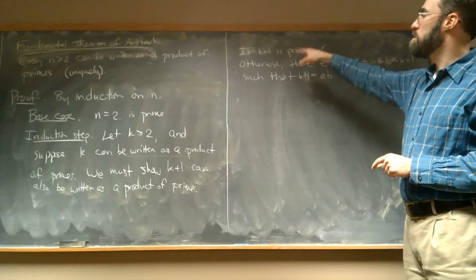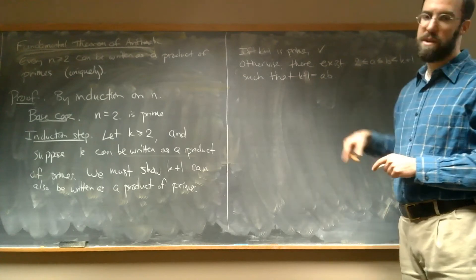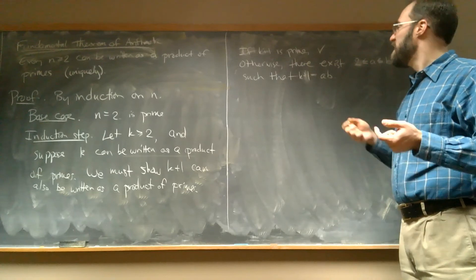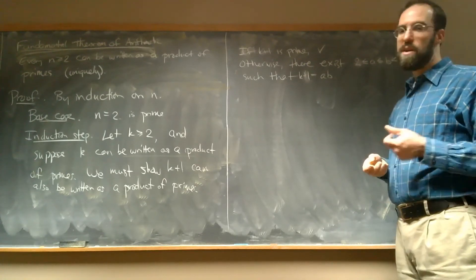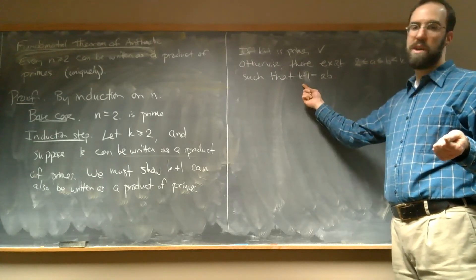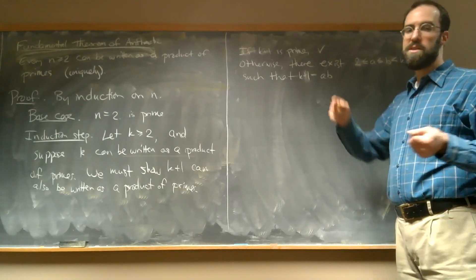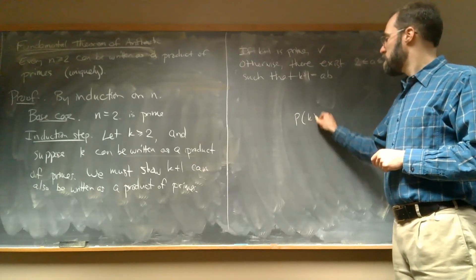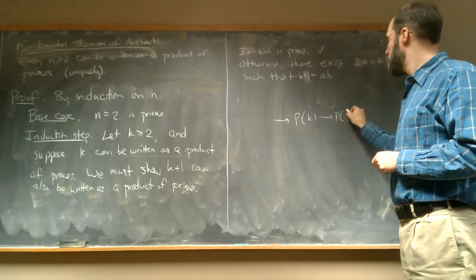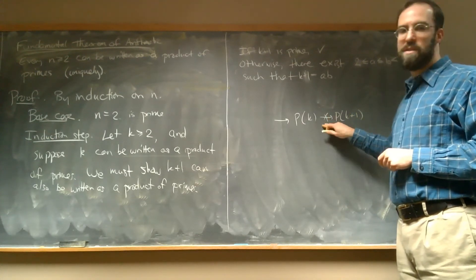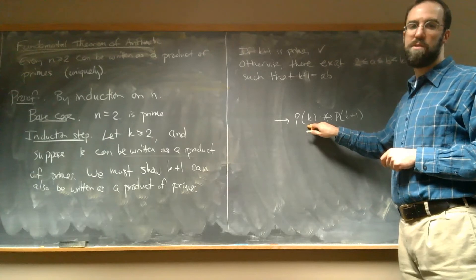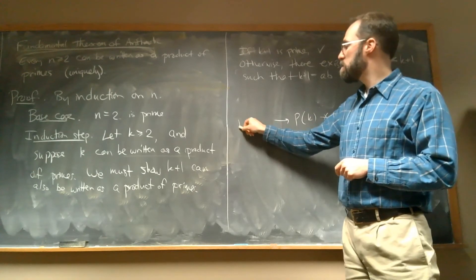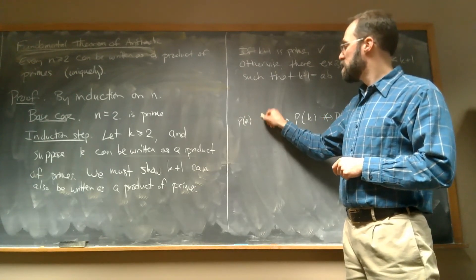Right, K plus 1 is the number that we're assuming is not prime, so that's what we can write as a product of A times B. Right, there's nothing about K. Knowing that K can be written as a product of primes doesn't help us say anything about K plus 1. And this is exactly the kind of thing I was talking about in the previous video, where we had this chain of implications. And I said sometimes it's impossible to directly go from knowing something about K to knowing something about P of K plus 1.